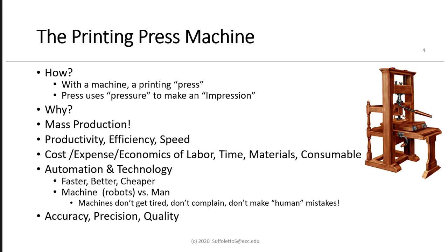We can modify the definition of printing to include how we do it — with a machine called the printing press, which uses pressure to make an impression. Gutenberg's press was a converted wine press for squeezing grapes. Why use a machine rather than doing this by hand like the scribes? It's all about mass production — productivity, efficiency, speed. We want to lower our costs and expenses. It's about the economics of labor, time, materials, and consumables.